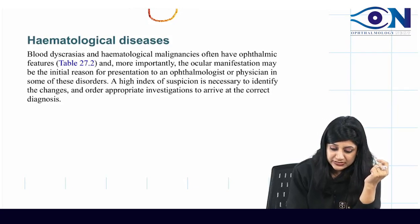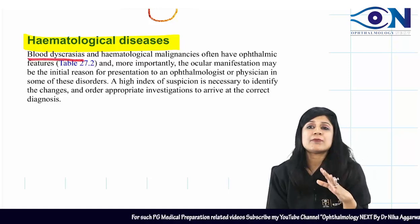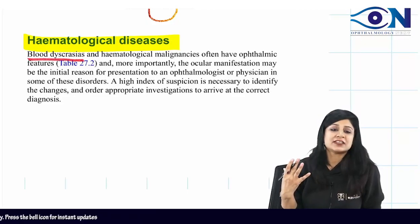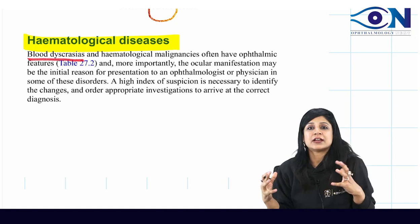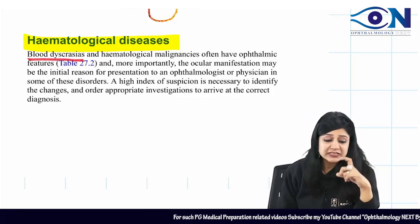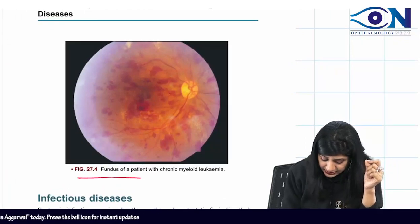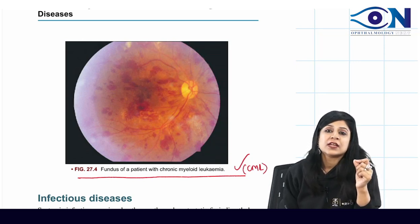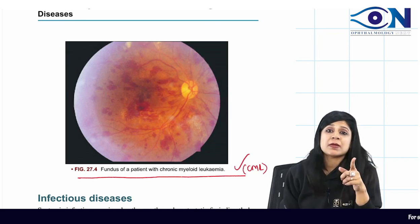Hematological diseases such as blood dyscrasias and malignancies have a number of ocular manifestations, but you have to keep a high degree of suspicion because malignancy is a severe disease. The fundus of a patient with chronic myeloid leukemia (CML) will show a number of hemorrhages. CML is one disease you cannot ignore — you will definitely get a question on this. Always remember the fundus image of CML.